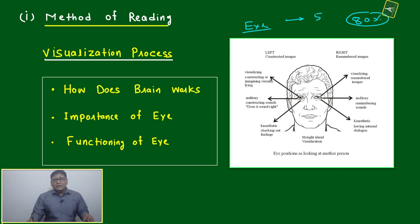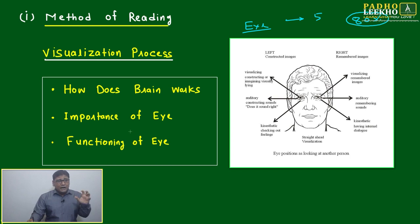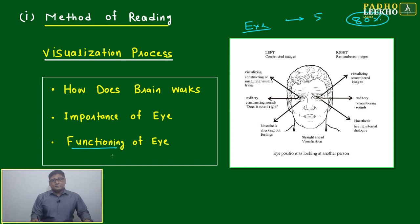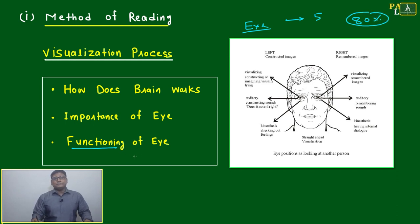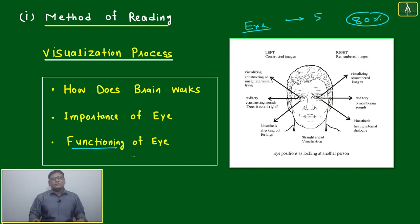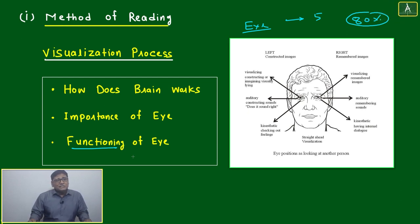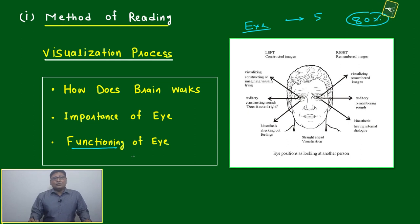Eighty percent of things we are gaining or perceiving through the eyes — so how to use the eye and how the eye is functioning really matters. Otherwise this eighty percent can come down. If your ear, nose, tongue, or skin are very good, they will together perceive hardly twenty percent of your knowledge and experience.